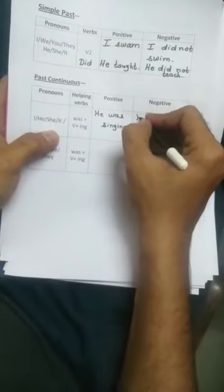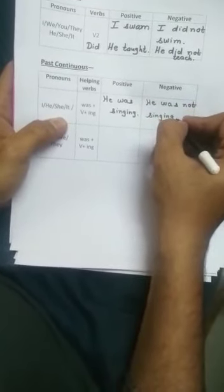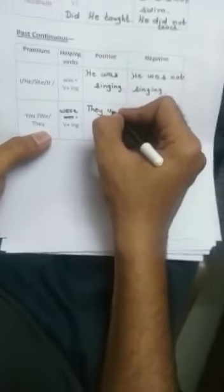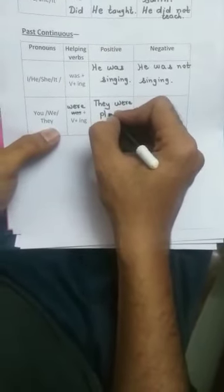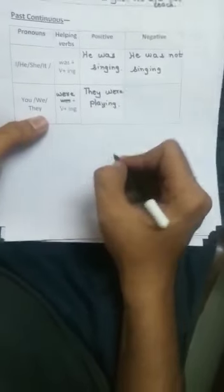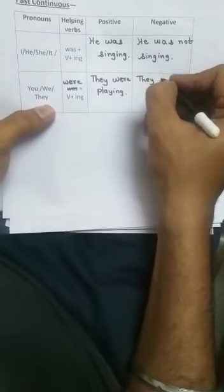Now past continuous: 'He was singing.' I'll put 'not' immediately after the helping verb — 'he was not singing.' Now with 'they': 'They were playing.' Making it negative: 'they were not playing.'